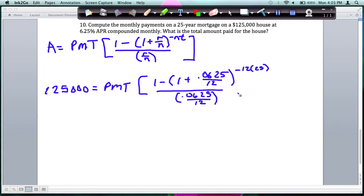Okay, so again, you can plug this all into your calculator. What I would do is multiply the 12 times 25, and this is negative so it's a negative 300, and then that's one less parentheses you have to worry about. So plug all of this into your calculator, and you should get $125,000 equals your payment times this whole right side should be $151.59.